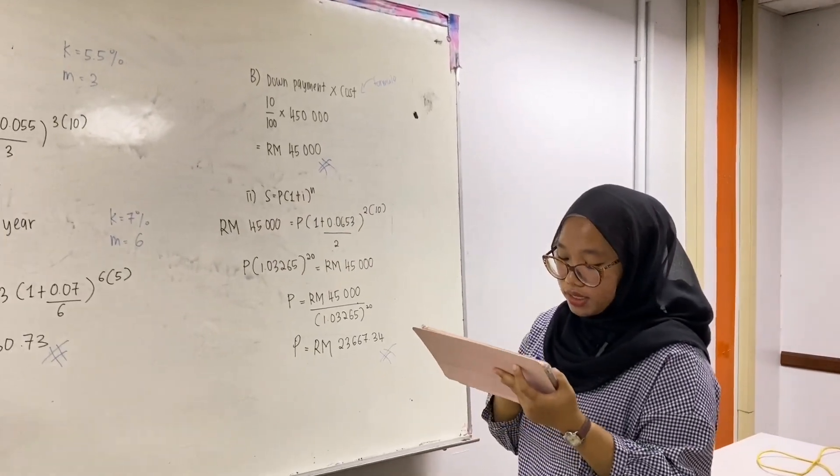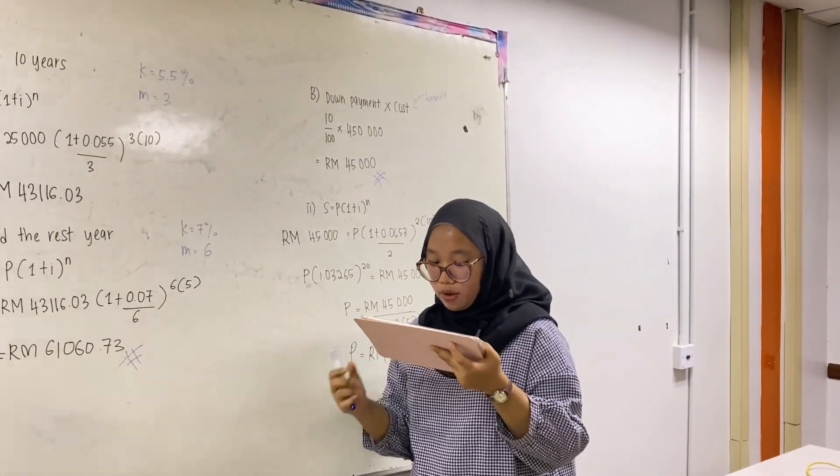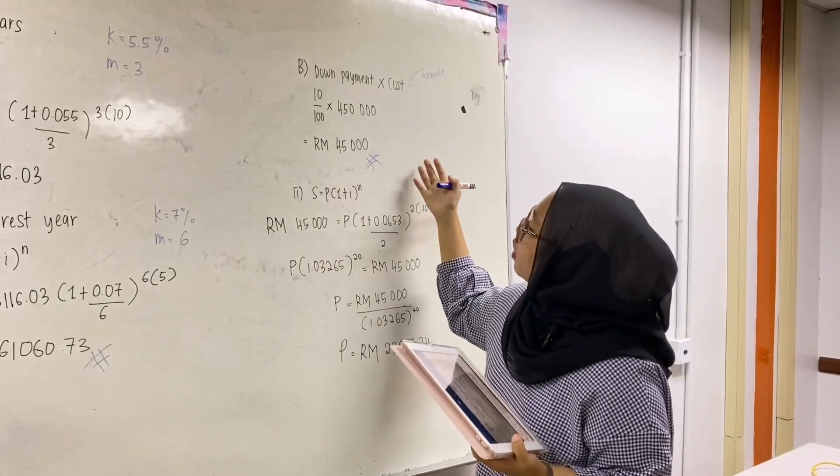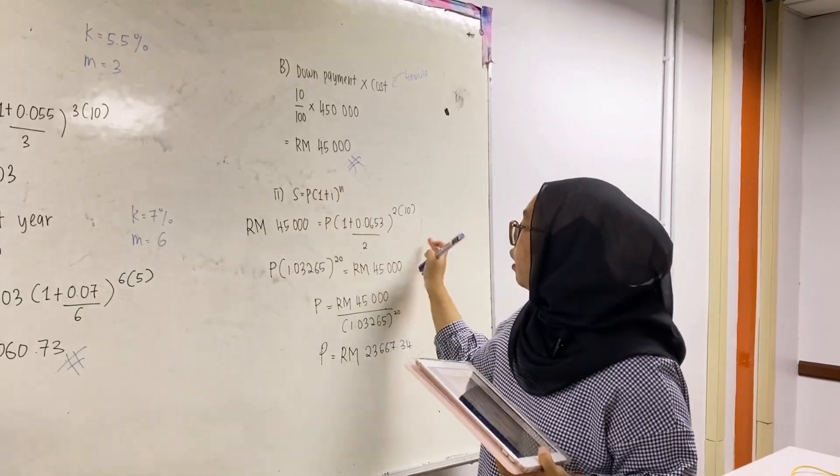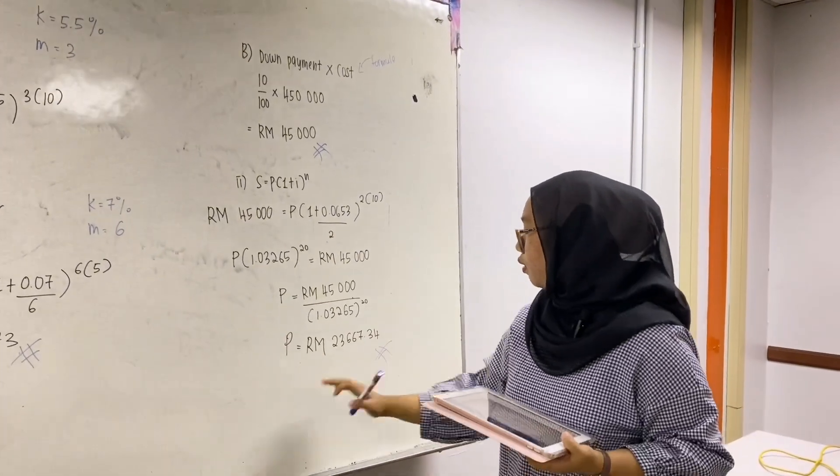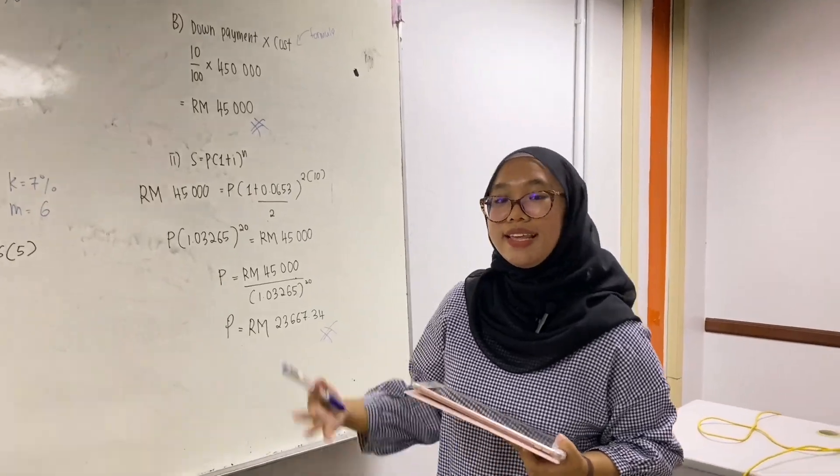For the second question, she asked for how much should he invest today to have enough money for the down payment. We will use this kind of formula, and S will be the down payment. Then resolve it, bring it to the left, divide, and we will get the final answer which is $23,667.34. Thank you.